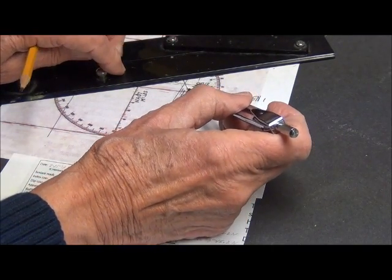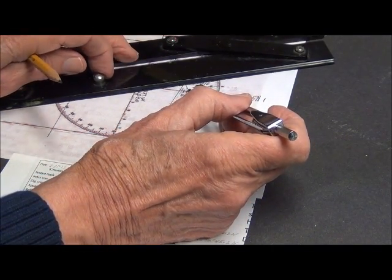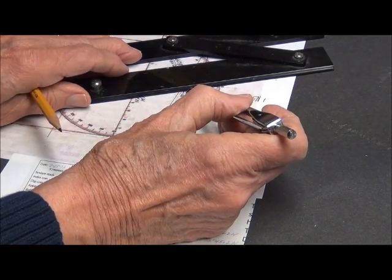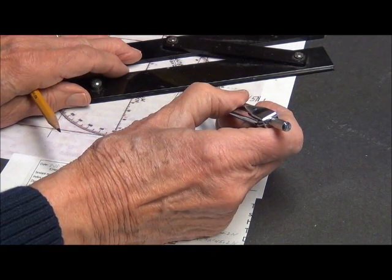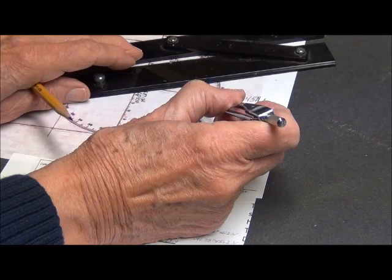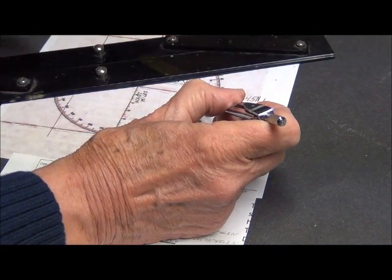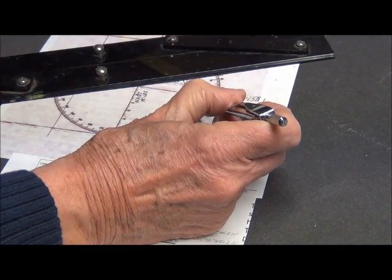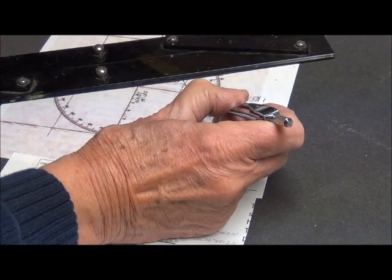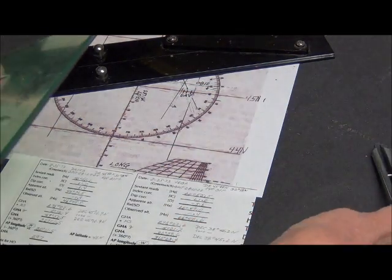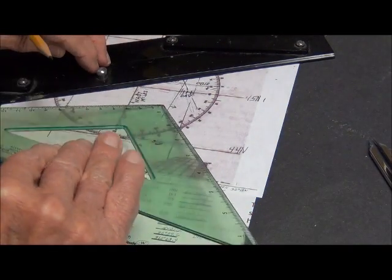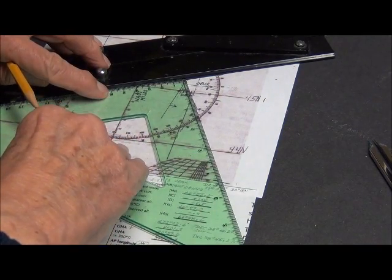We measure off the mileage three point four. We go to Deneb with it, measure off three point four. And put a ninety degree angle down, which gave us this line.